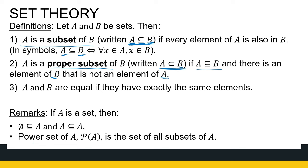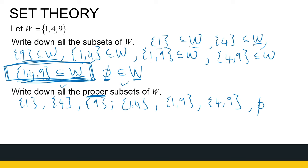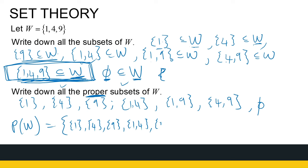One more thing: if we talk about the power set of a set, a power set is the set of all the subsets. So if I've got all the subsets and I make a new set listing all of them, the power set of W is: {1}, {4}, {9}, {1,4}, {1,9}, {4,9}, {1,4,9}, and the empty set. That's the power set — a set consisting of all subsets. A set is just a collection of objects, and here the objects are sets themselves.